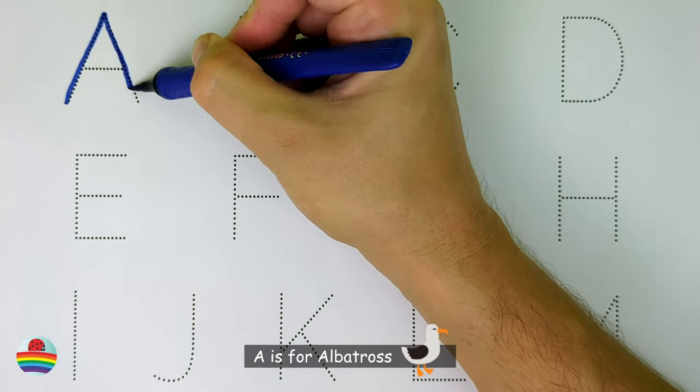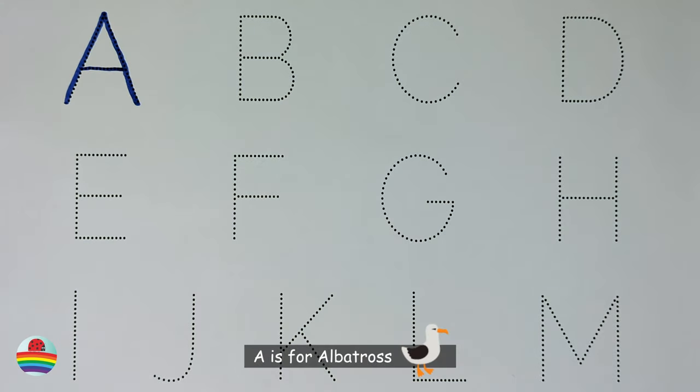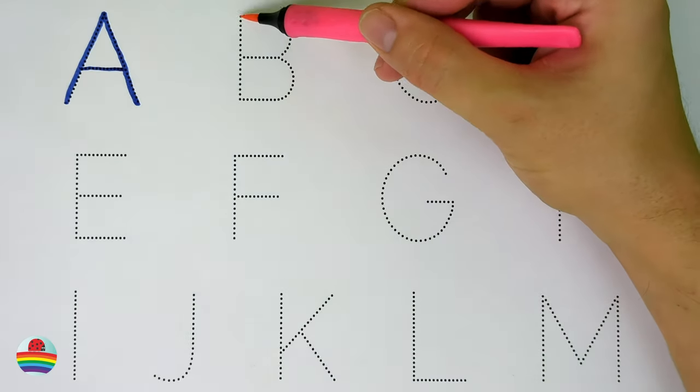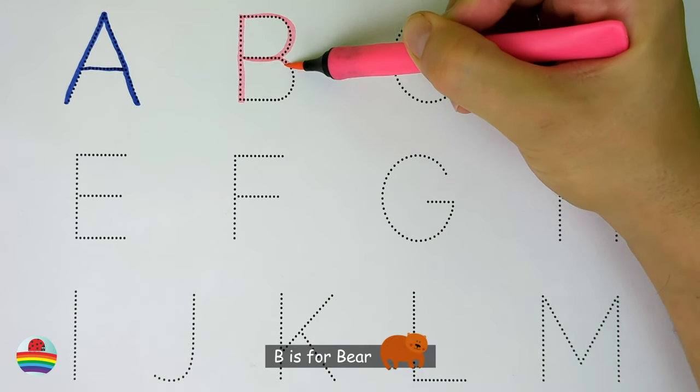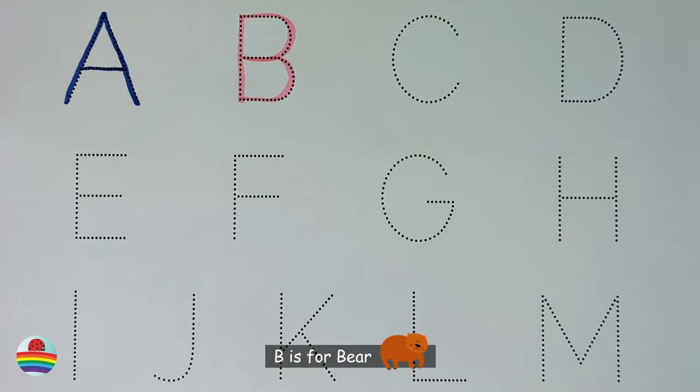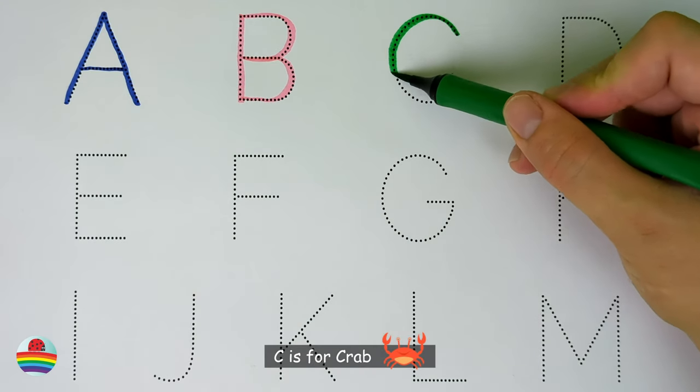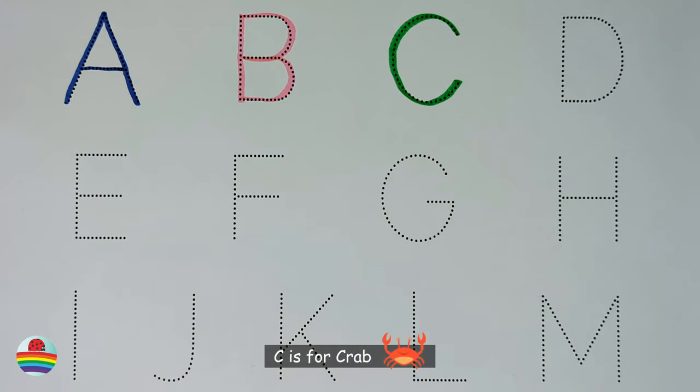A. A is for albatross. B. B is for bear. C. C is for crab.